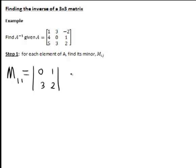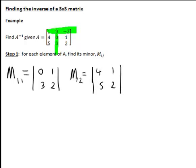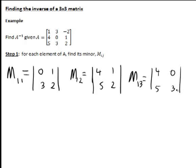Similarly, the minor M12 of the element in row 1, column 2 would be found by excluding row 1 and column 2, giving the determinant of the matrix [4, 5; 1, 2]. Continuing on, the minor M13 will be the determinant of [4, 0; 5, 3].